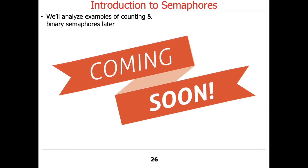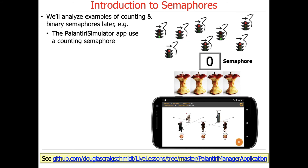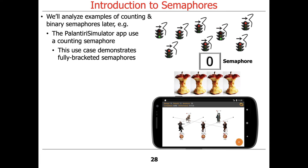The assignment you're doing uses a counting semaphore with a count equal to the number of palentieri — for example, three palentieri and five beings — to mediate access. This assignment also demonstrates fully bracketed semaphores, because the thread that acquires the semaphore must be the one to release it.